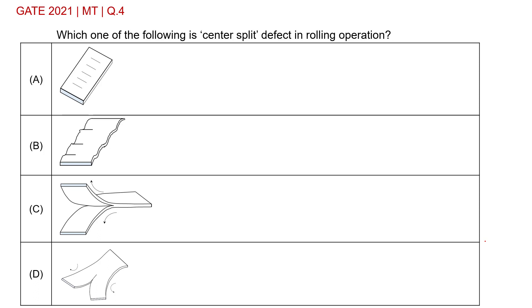Gate 2021 Metallurgy, Question number 4: Which one of the following is the center split defect in the rolling operation? There are four options with four images.